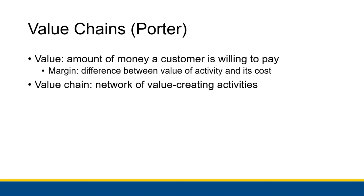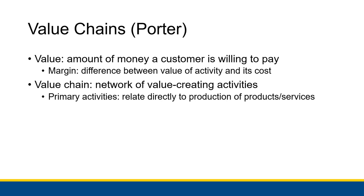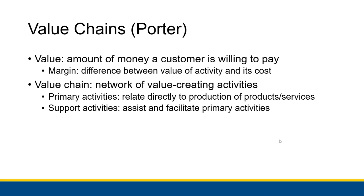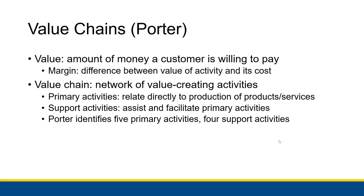A value chain is a network of value-creating activities — the chain of activities from the very beginning, where you're getting everything you need to create your product, to the very end, where you're selling and delivering that product to customers. Any value chain consists of two types of activities: primary activities, which relate directly to the production of products and services, and support activities, which assist and facilitate the primary activities. Michael Porter identifies five primary activities and four support activities.